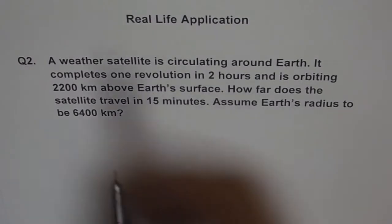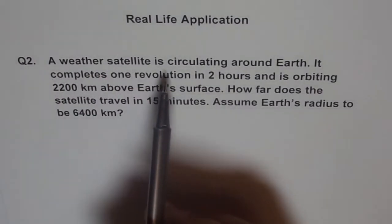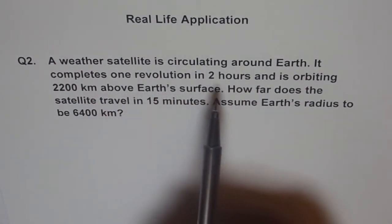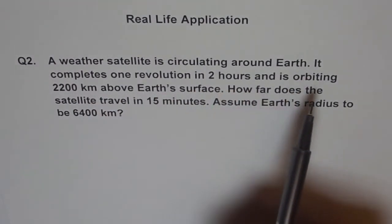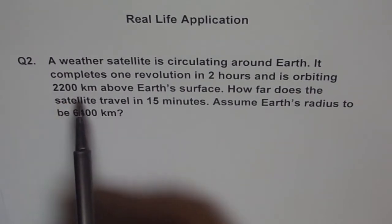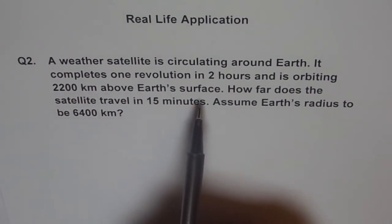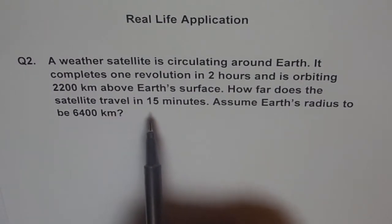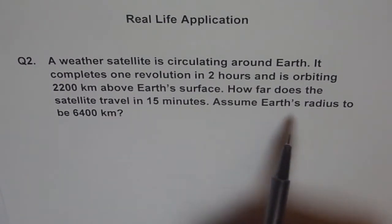The problem says a weather satellite is circulating around Earth. It completes one revolution in two hours and is orbiting 2200 km above Earth's surface. How far does the satellite travel in 15 minutes? Assume Earth's radius to be 6400 km.